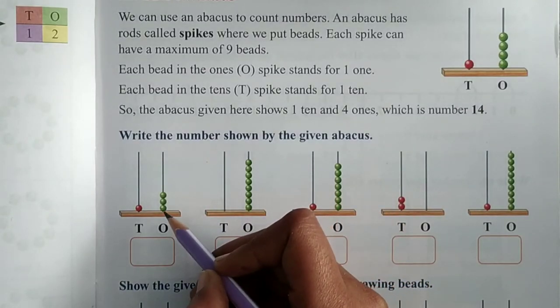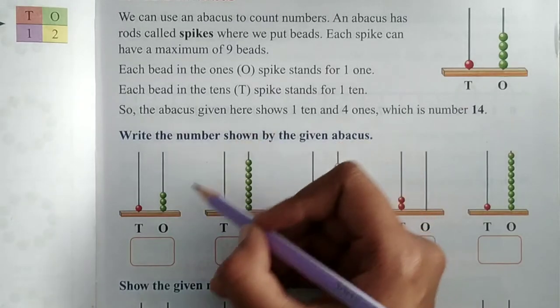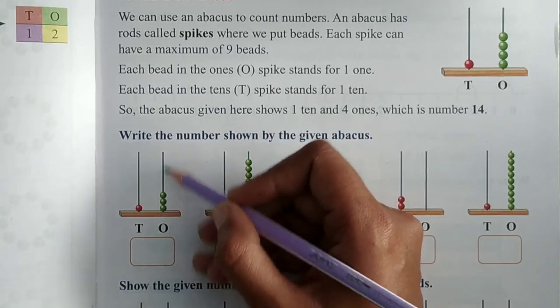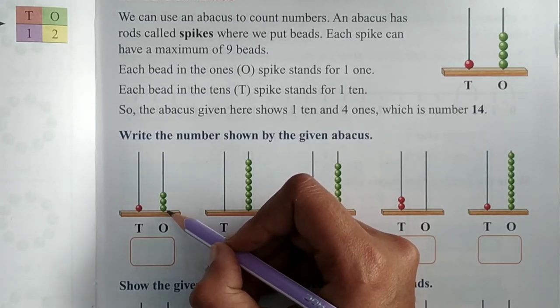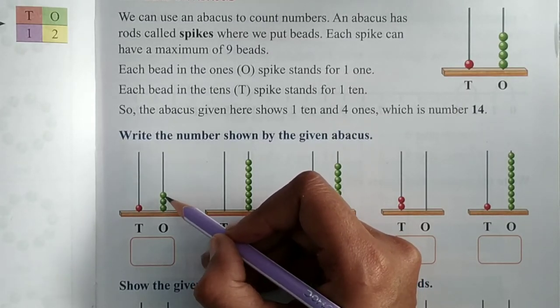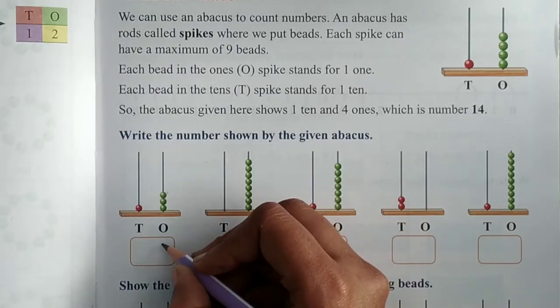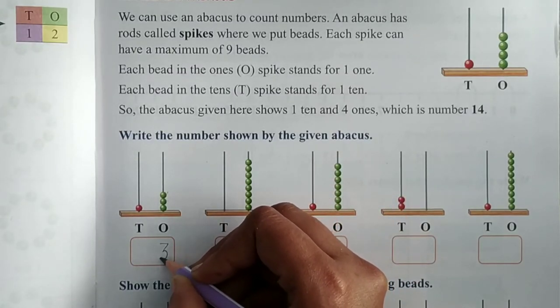So I am doing here question number one. So tell me, in ones spike, how many beads are there? Let's count. One, count with me. One, two, and three. So what I will write under one? Three.